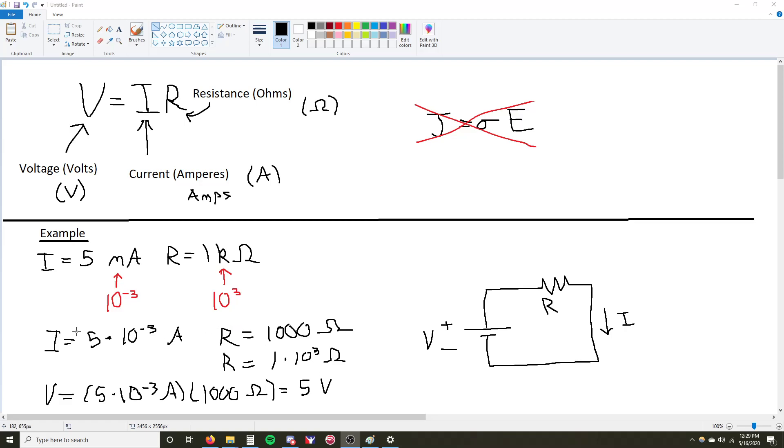But for those who don't, I'm just going to show how you need to replace this milli with 10 to the negative 3. Current is equal to 5 times 10 to the negative 3, and then resistance is equal to 1 times 10 to the 3 ohms, which is also equal to 1,000 ohms.